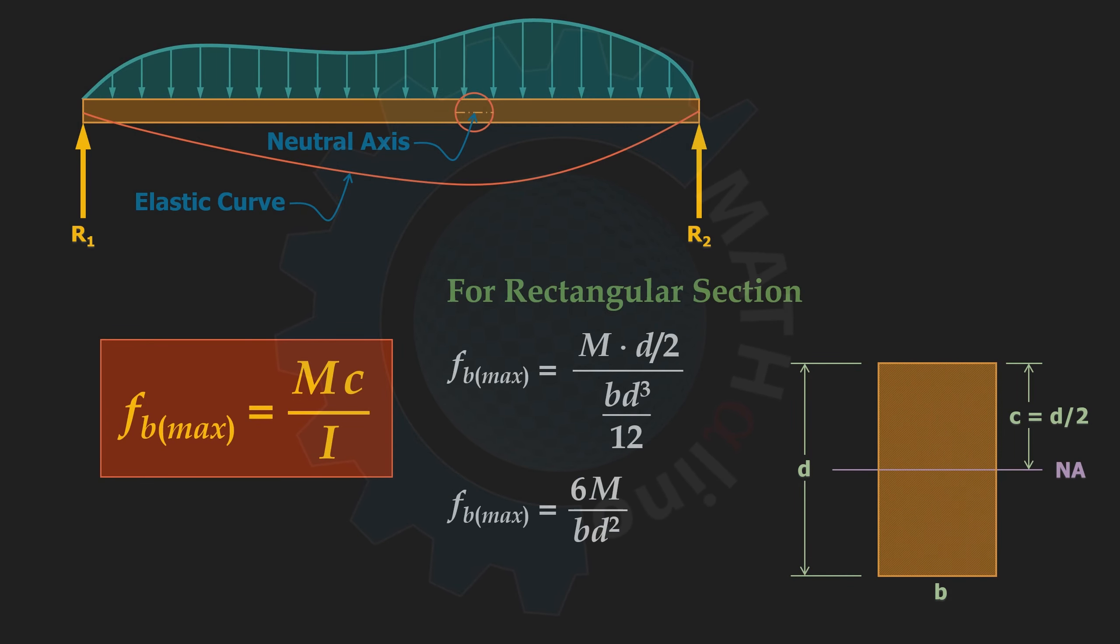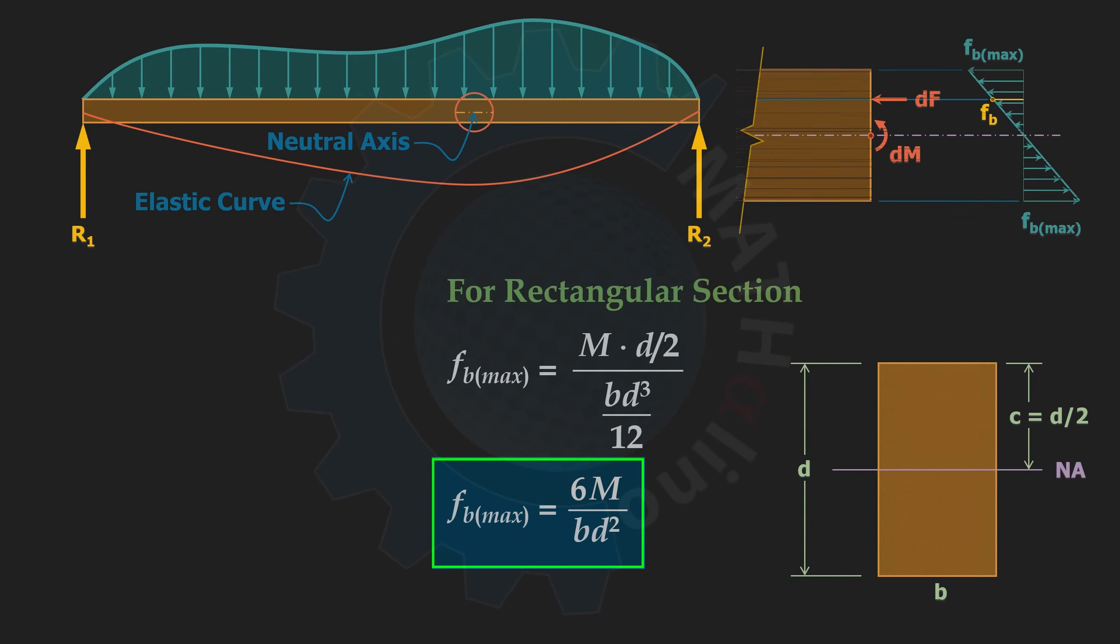Note that this formula is only applicable at the topmost or at the bottommost part of the rectangular beam. A common misuse of this formula is using it at a rectangular section but not at the extreme fibers. If you are to find the stress, say at this fiber here, this is not applicable. You need to use the formula My over I for this.